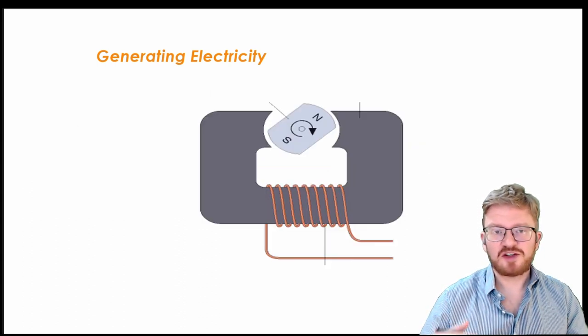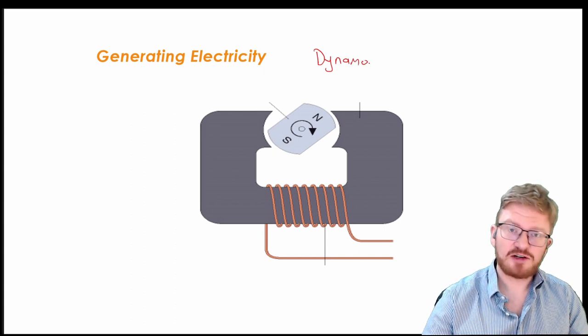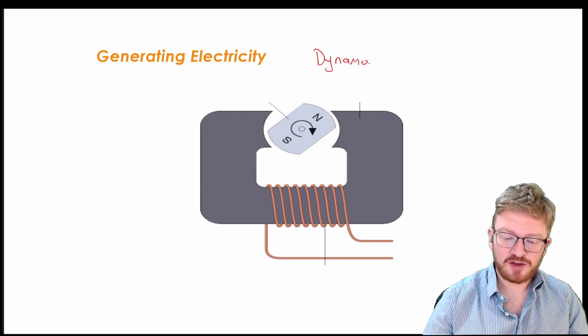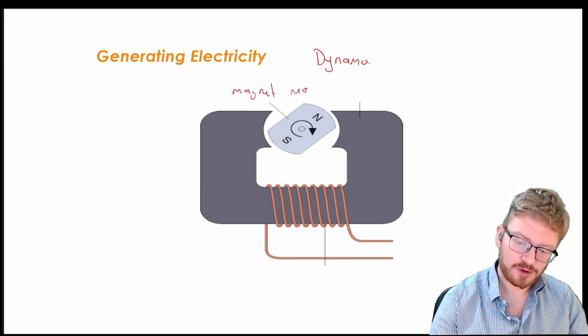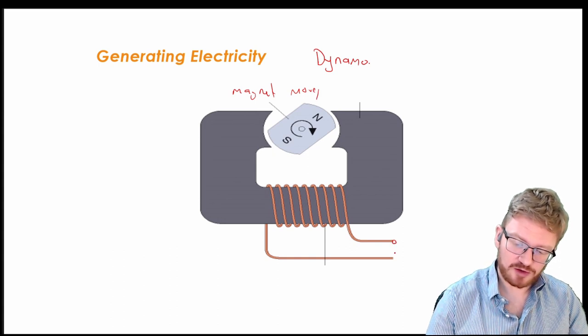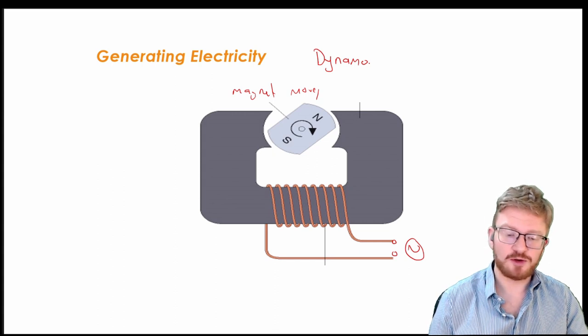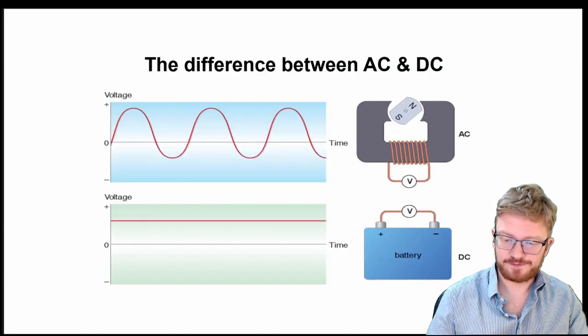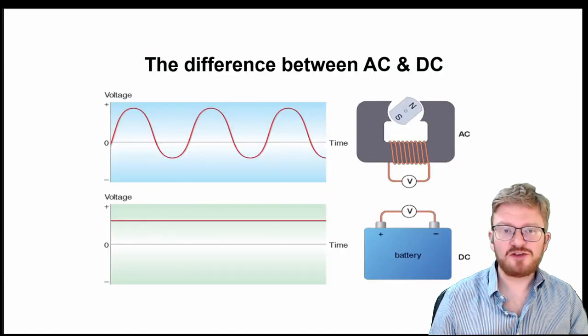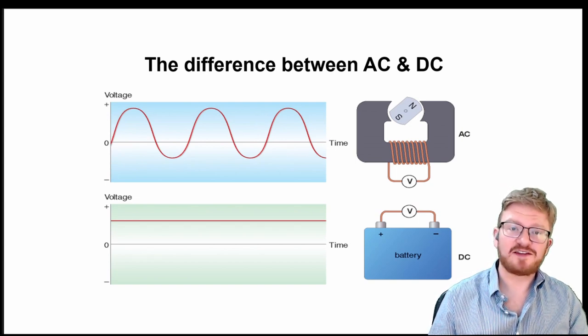You might see this sometimes in another type of generator. So this type of generator is usually known as a dynamo. So there are usually two different types of generators that you can use. In the dynamo, the magnet moves, and you get an alternating current coming out. Now the other type of generator that we often see are where you have a coil of wire that you spin in a stationary magnetic field. So as you've probably seen before, this is going to give us AC as opposed to DC.